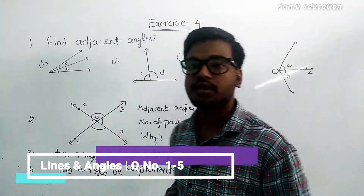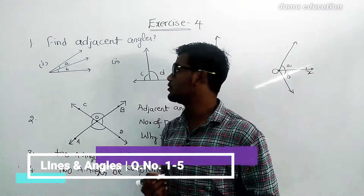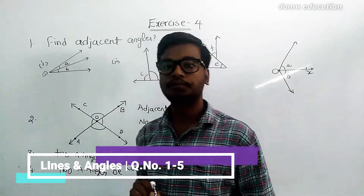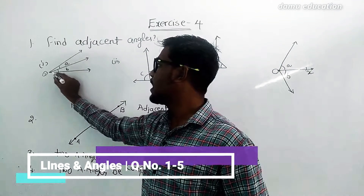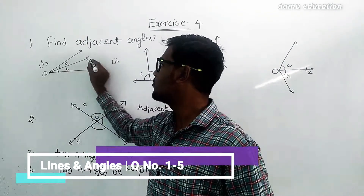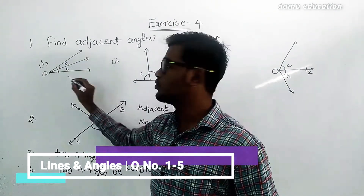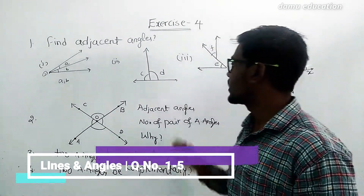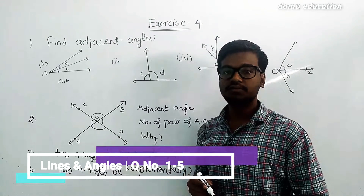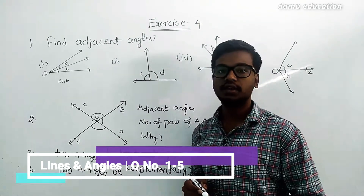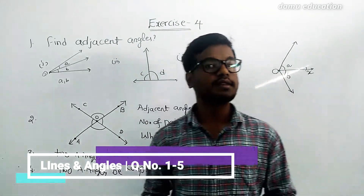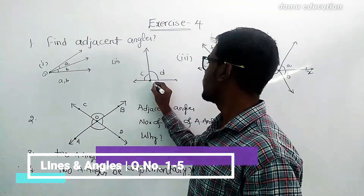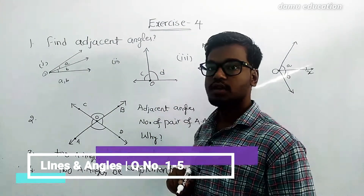In Exercise 4, the first question is: find the adjacent angles. For the first figure, A and B have the same vertex O and the same middle arm, so these two angles A and B are adjacent angles. For the second pair, C and D — yes, C and D are adjacent angles, as they share the same vertex O.